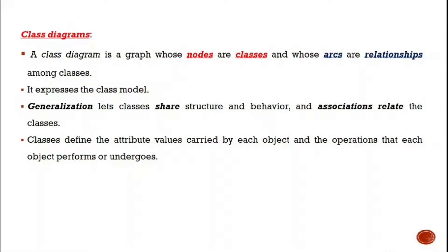A class diagram is a graph whose nodes are classes and whose arcs are relationships among classes. We will come across many diagrams in Chapter 3 on how to write class diagrams. The nodes are identified as classes and the arcs represent relationships among classes. Generalization lets classes share structure and behavior, and associations relate the classes — that is, the link from one class to another showing how behaviors are shared.